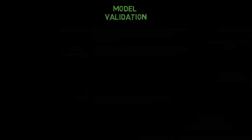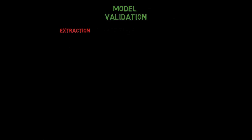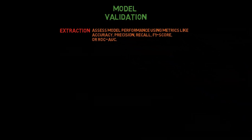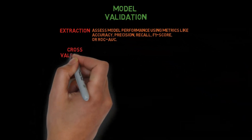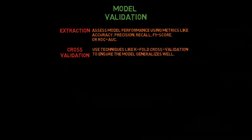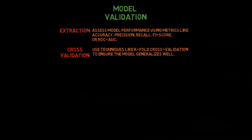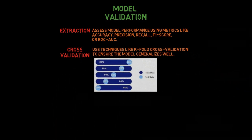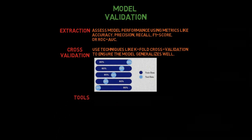Step 5: Model validation. Evaluation: Assess model performance using metrics like accuracy, precision, recall, and F1 score. Cross-validation: Use techniques like k-fold cross-validation to ensure the model generalizes well. Tools: Use validation tools available in ML libraries or custom scripts.